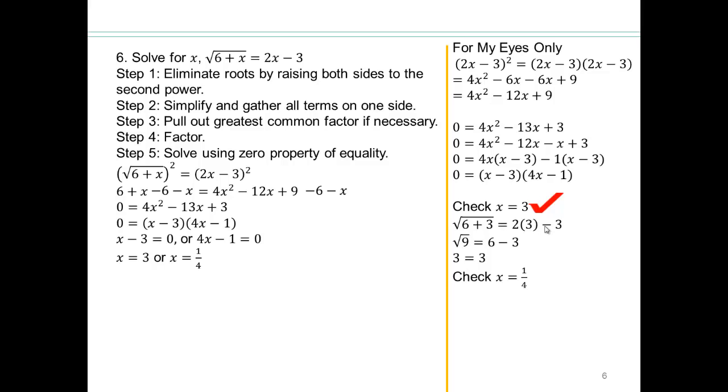Let's try the quarter. 6 plus a quarter equals 2 times a quarter minus 3. Does that work? Let's take a look. 6 plus a quarter would be 25 quarters, which would be 5 halves. And 2 times 1 quarter is half. Half minus 3 is negative 5 halves. And 5 halves is not the same as negative 5 halves, so that one does not work.